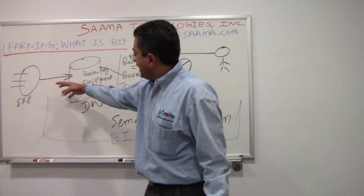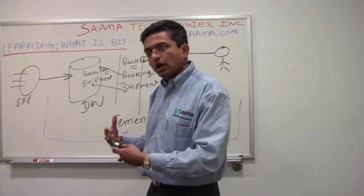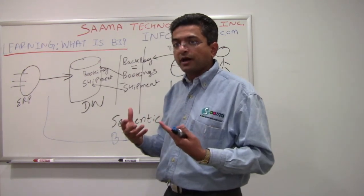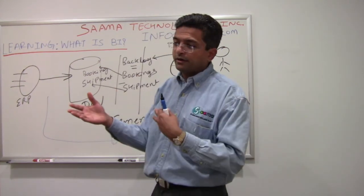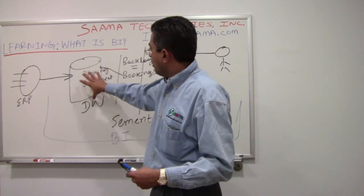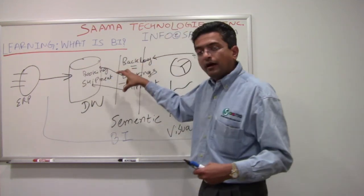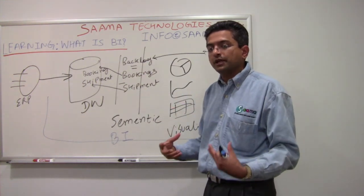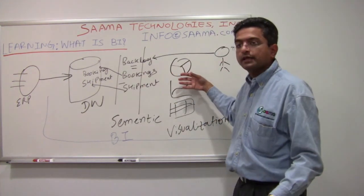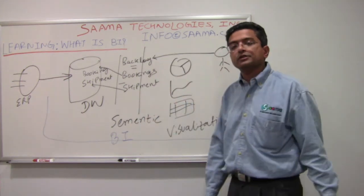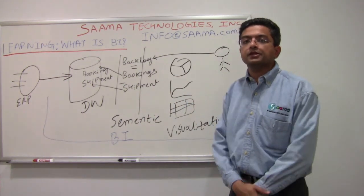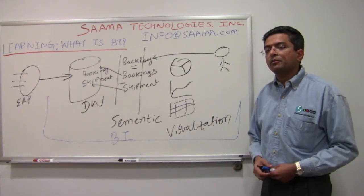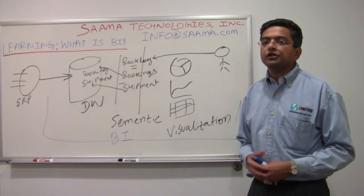Once again, that includes extraction of information, massaging, business rules, aggregation or summarization, and even data quality — for example, correcting an incorrect address. Then applying an abstraction layer with business terms and definitions, and finally visualizing and consuming it. That whole process is what business intelligence encompasses. Hope that helps — maybe in another blog I'll go into more detail on each of these areas.